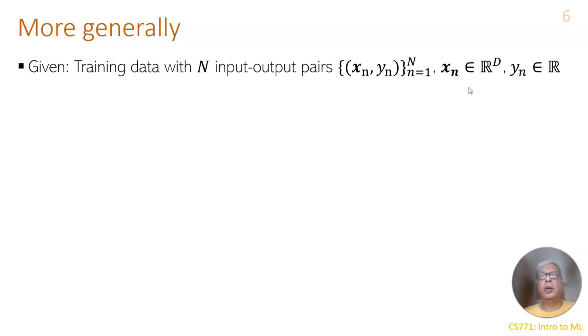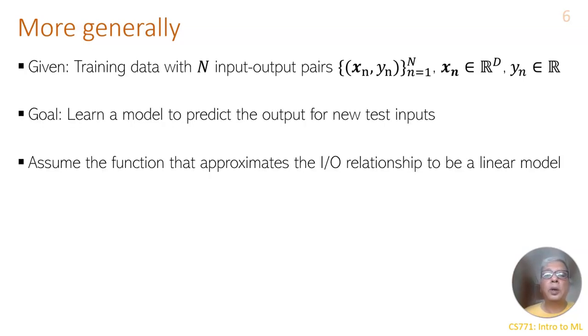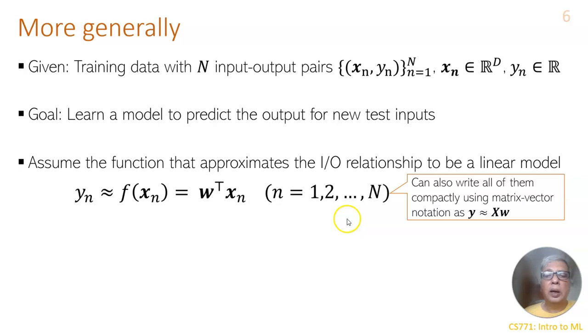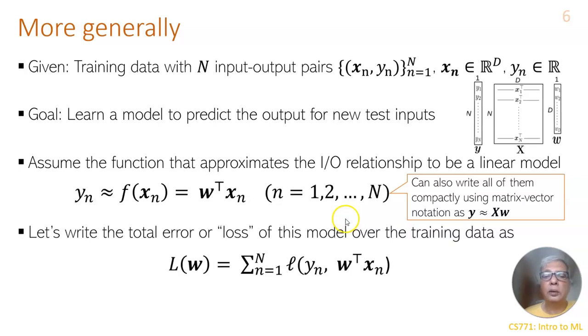More generally, in multivariate setup, we have yn equal to f(xn) or w transpose xn for n equal to 1 to capital N. We denote the loss function as the loss of the actual value given the predicted value. This could be the squared error loss.